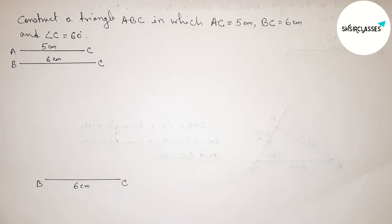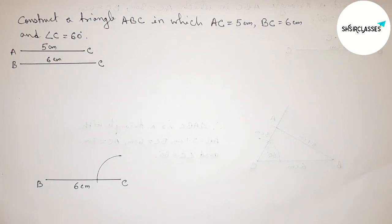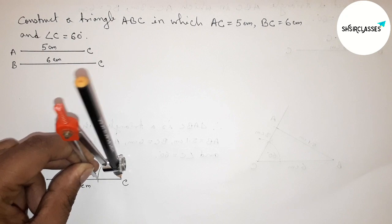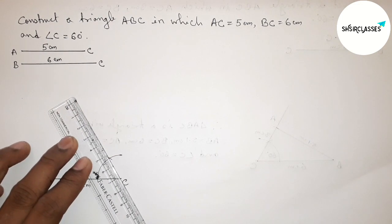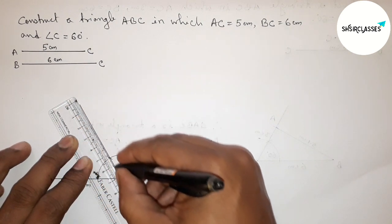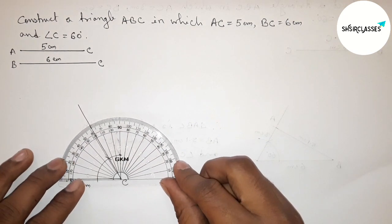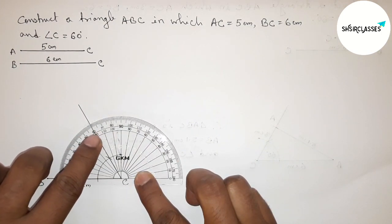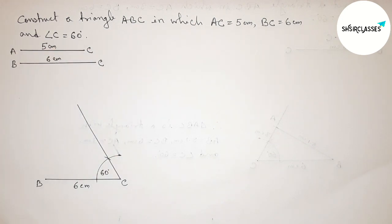Putting the compass on the point C and taking any length, drawing an arc. Now putting the compass on that arc point, taking the same length and cutting here. Joining this line to get a 60 degree angle. Checking this angle with the help of a protractor — this is perfectly a 60 degree angle, so angle C equals 60 degrees.